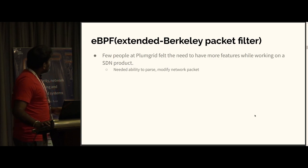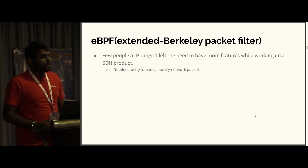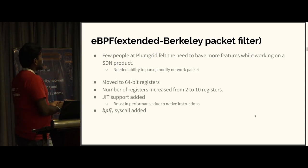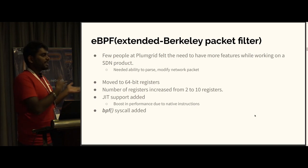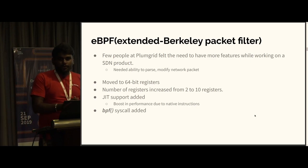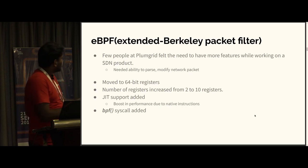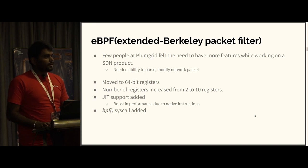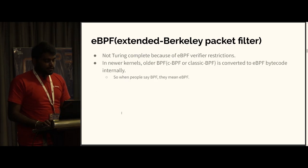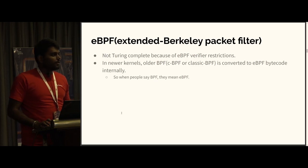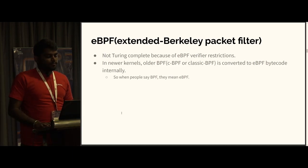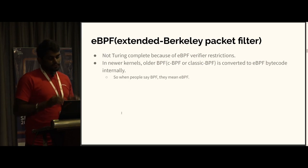That is why eBPF came across. PlumGrid were the people who said: we want to do something in SDN and we want more features — the ability to pass the packet, modify the packet, and so on. What they introduced was a move from 32-bit to 64-bit. Registers increased from 2 to 10, JIT support was added, and one most important thing is the BPF system call was added. Now whenever you say BPF, people usually mean eBPF — not the original BPF. Unless specified, they will say classic BPF. So BPF now means eBPF — extended Berkeley packet filter.